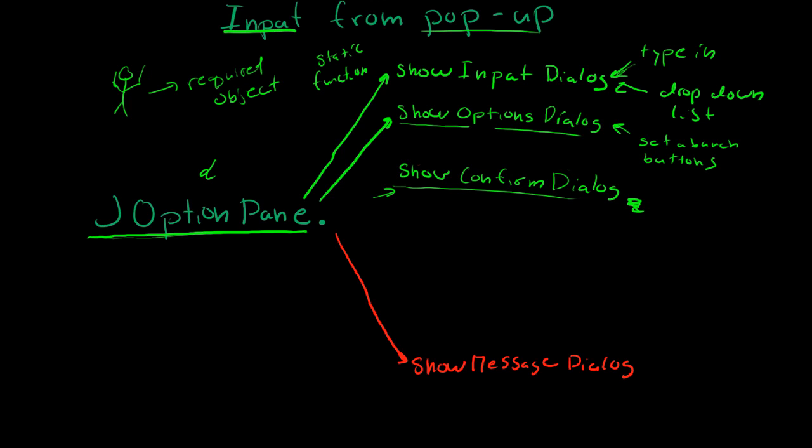But basically, static means they don't change at all. They always perform the same way, so you don't need to create different JOptionPanes.